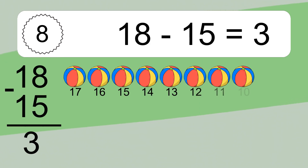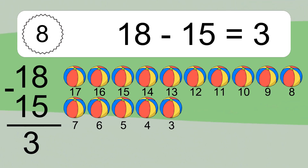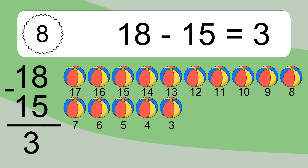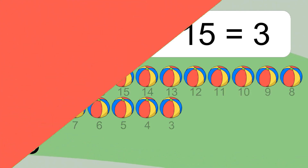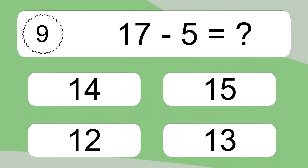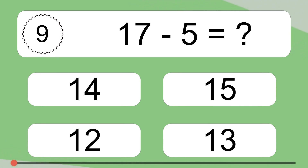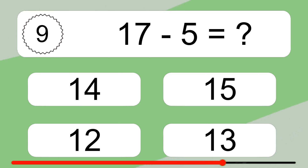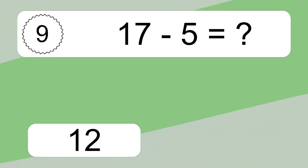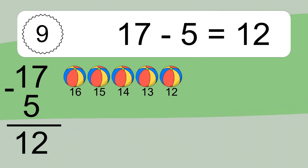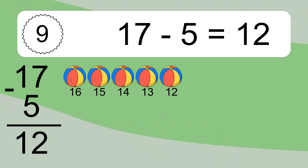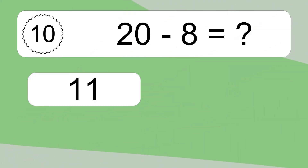18 minus 15 equals 3. Let's count it: 17, 16, 15, 14, 13, 12, 11, 10, 9, 8, 7, 6, 5, 4, 3. 17 minus 5 equals what? 17 minus 5 equals 12. Let's count it: 16, 15, 14, 13, 12.